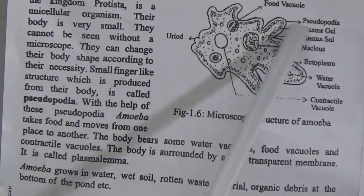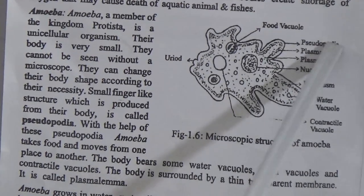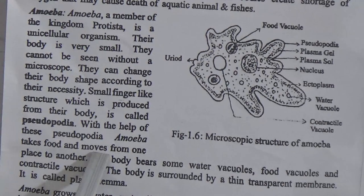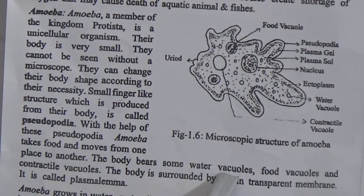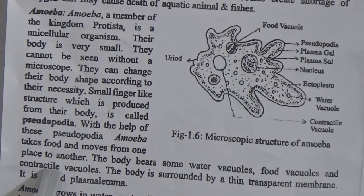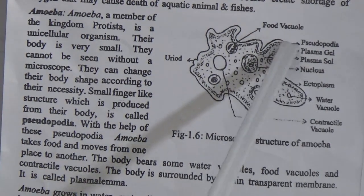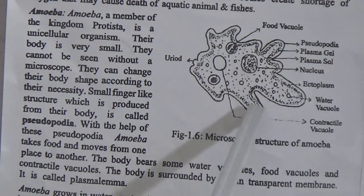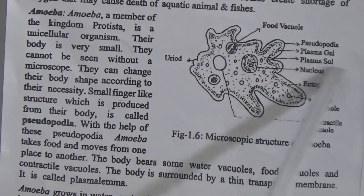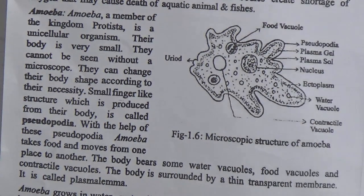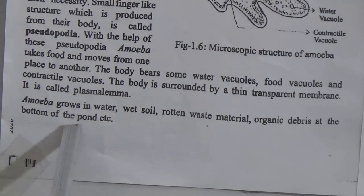The small finger-like structure produced from the body of amoeba is called pseudopodium. With the help of pseudopodia, amoeba takes food and moves from one place to another. The body bears water vacuoles, food vacuoles, and contractile vacuoles. The body is surrounded by a thin transparent membrane called plasmalemma. The body contains plasma gel, plasma sol, and a nucleus. Amoeba grows in water, waste soil, rotten material, and organic debris at the bottom of ponds.